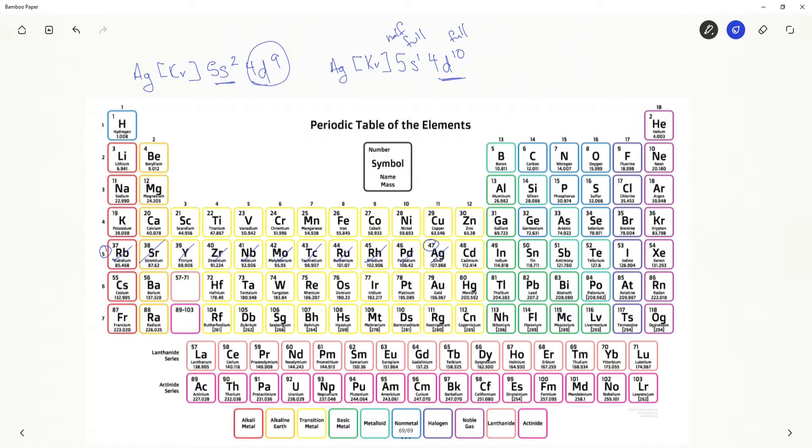You also see this down in the lanthanide and actinide series. So if we take a look at europium atomic number 63, our expected electron configuration is this. And now you can probably guess what europium does.